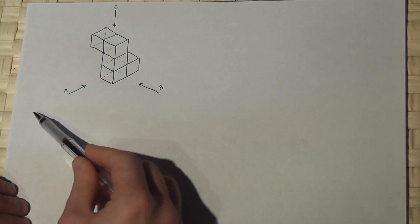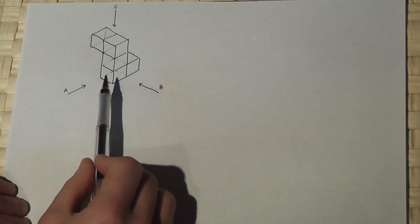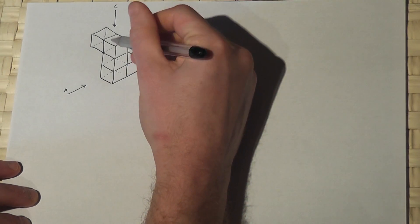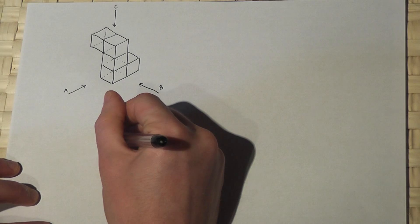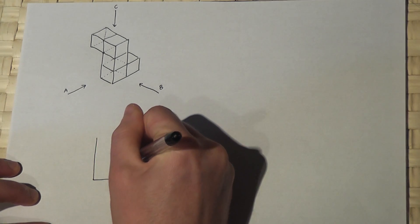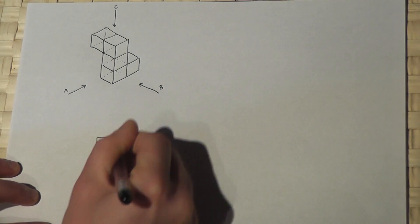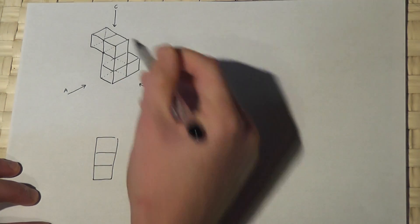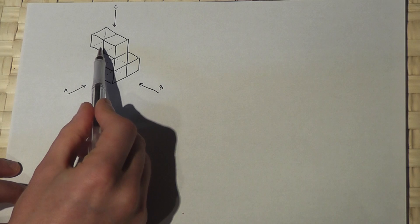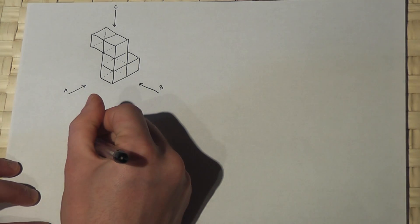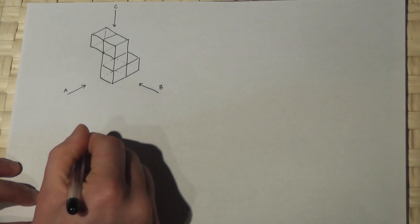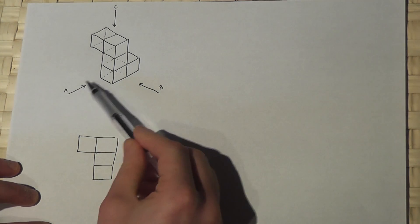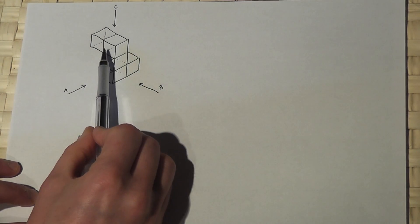Now then, from viewpoint A you would see an L shape on its side, so you'd see the tall part. From viewpoint A you'd see three tall cubes - one, two, three - and you see the one just to the left at the top like so. And there we have the L shape which we'd see from viewpoint A, the tall part and the bit to the left.